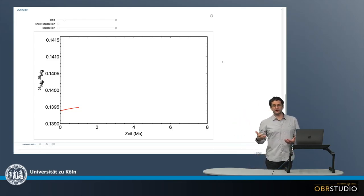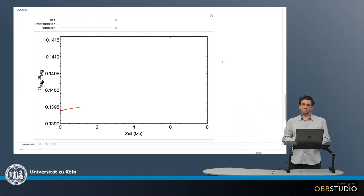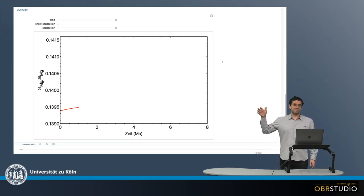Radiogenic evolution plots illustrate how the radiogenic composition of reservoirs evolve over time. Essentially, such an evolution plot is the same as a decay plot, only that the parent is not included here, but only the daughter isotope.